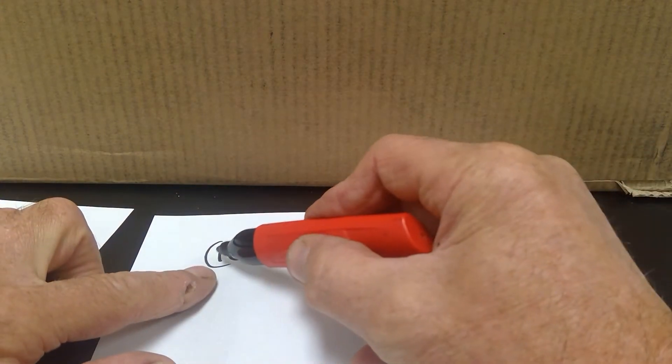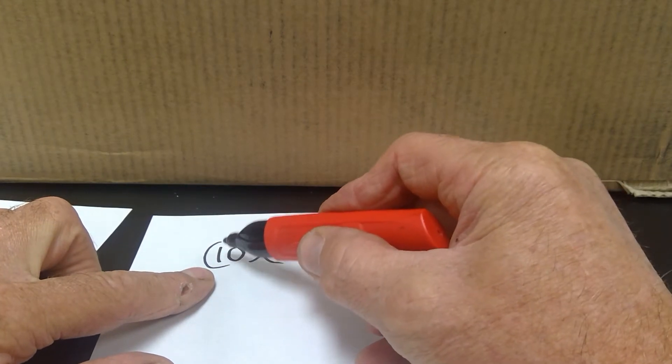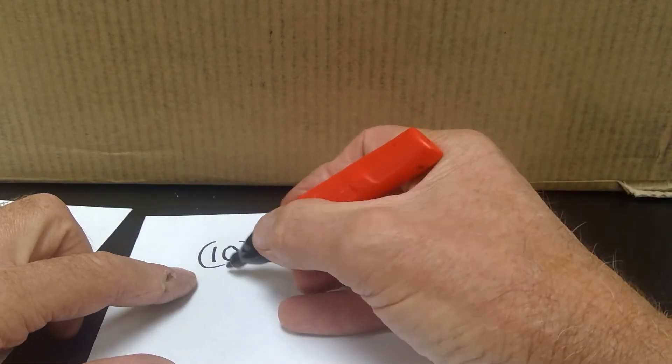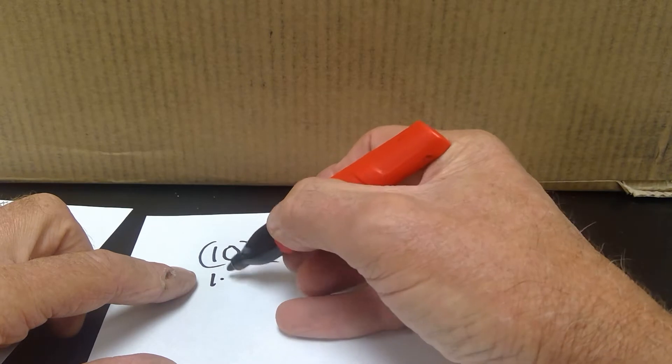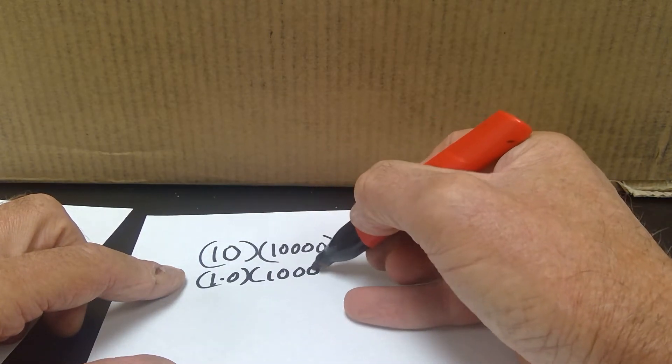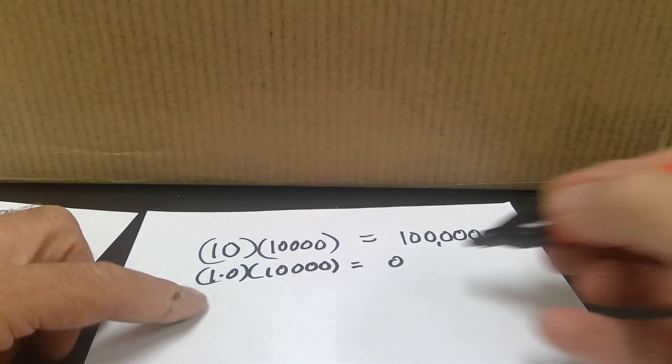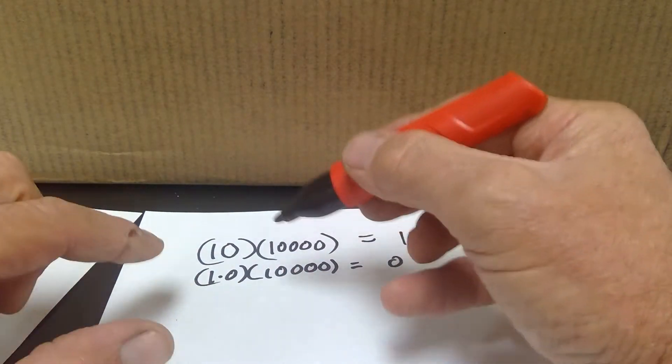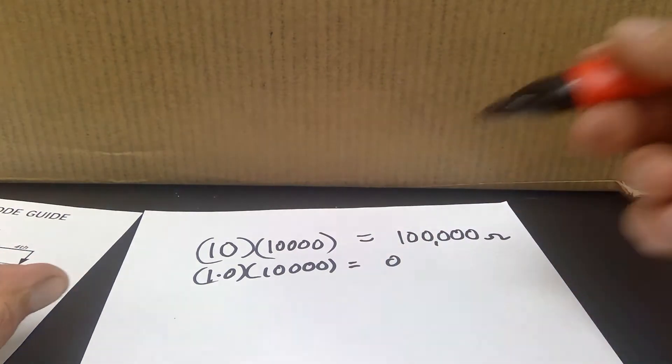Now note that I did not multiply the number one and the number zero. If I did that, I would have one times zero times 10,000, and that equals zero. So we know that if we do that, that's the wrong method to use. We can't do that.